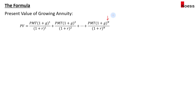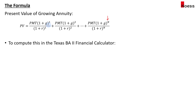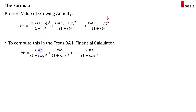To modify the inputs so that you can use your financial calculator, we will convert (1+G)/(1+R) into only one rate. The idea is to express the growing annuity as a constant annuity divided by (1 plus the adjusted discount rate), where this adjusted discount rate accounts for both the growth rate and the discount rate.